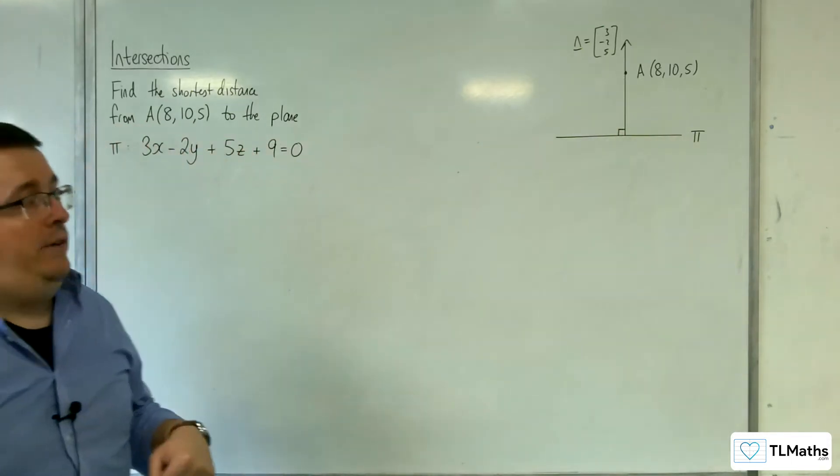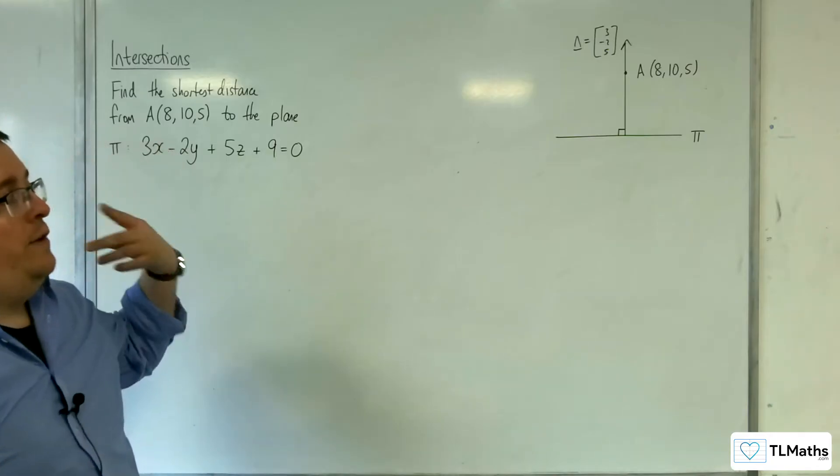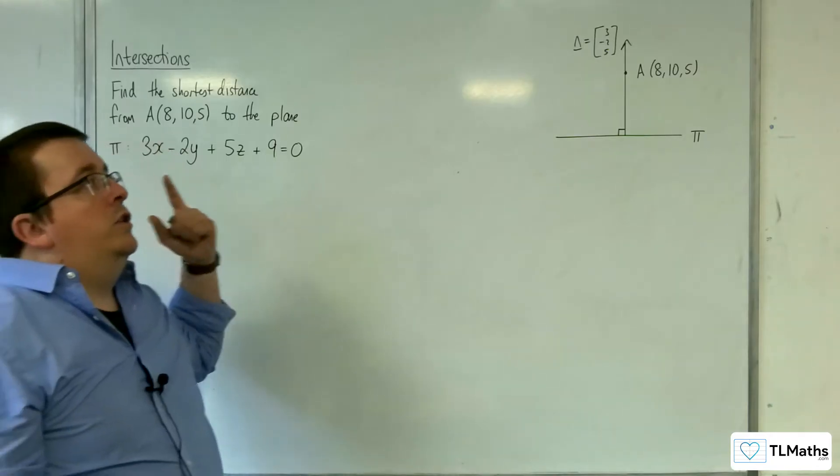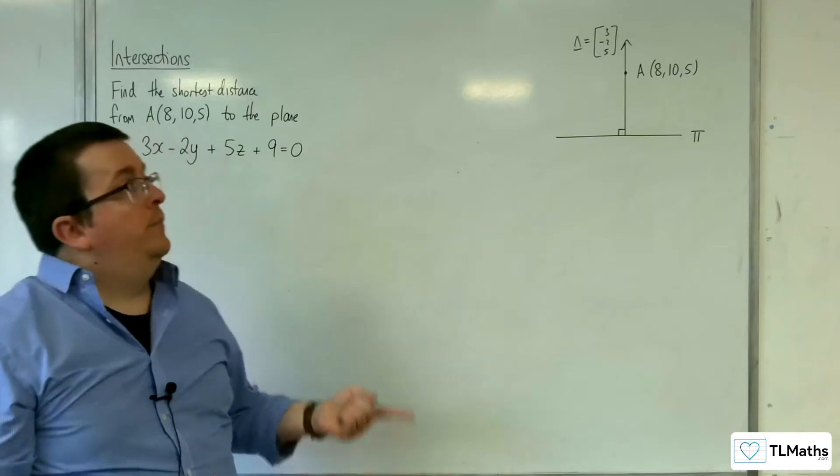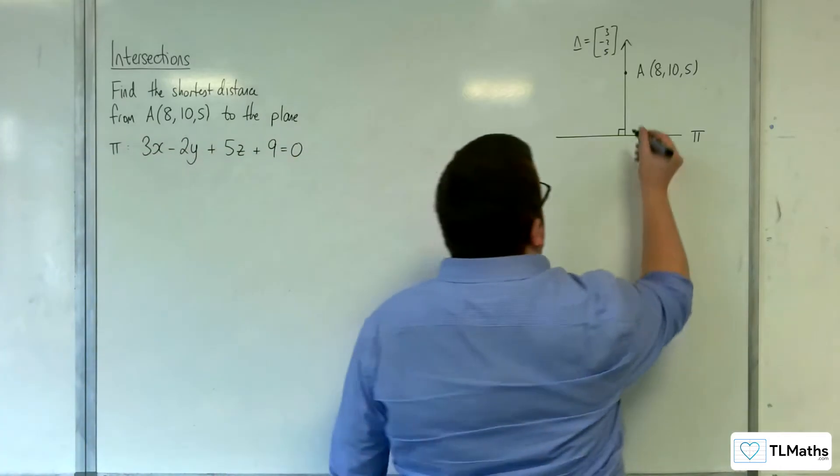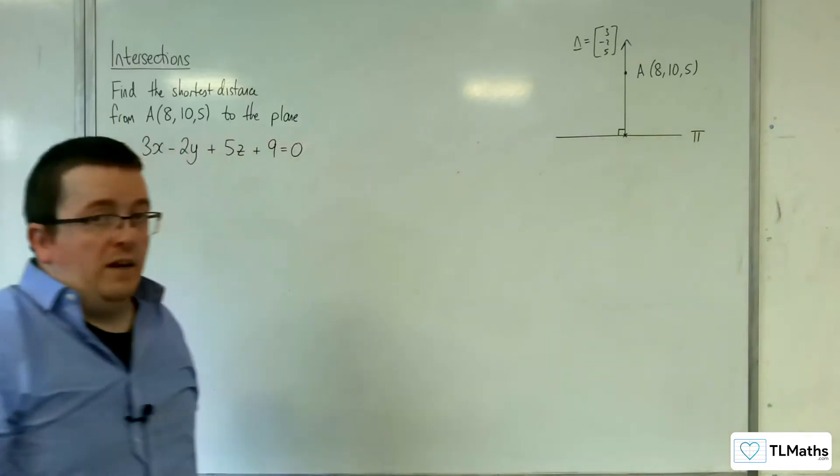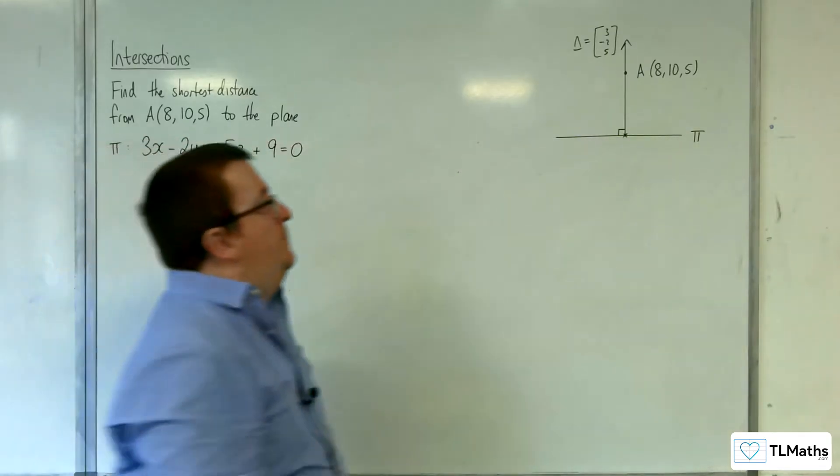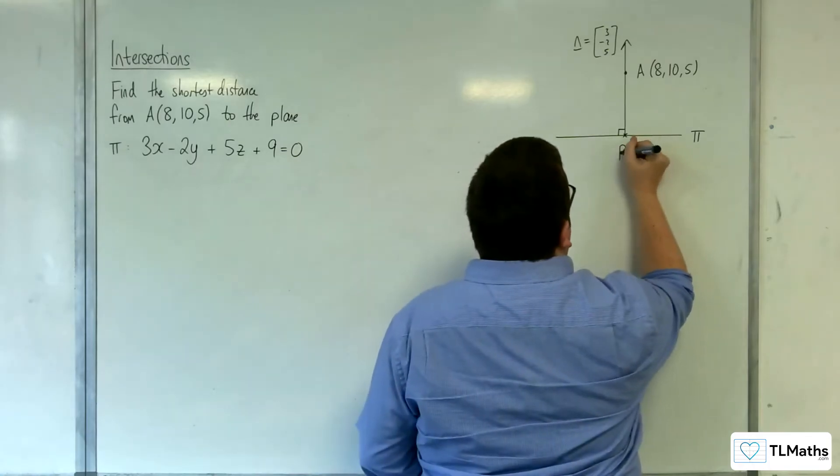Now what this means is that there is a line going through A with that direction, and where that intersects the plane is a point that I'm interested in. Because that is a point, let's say P,